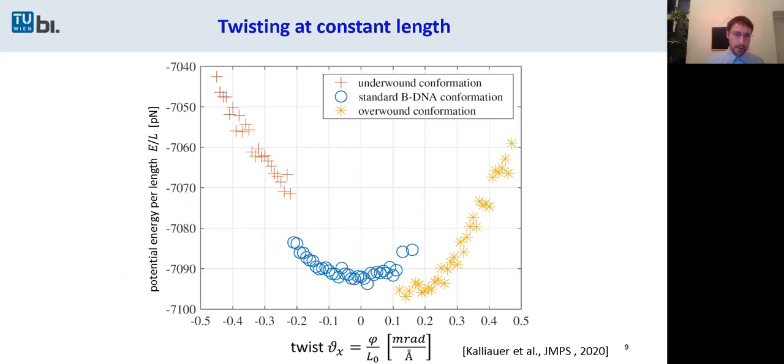Now we look at the other way around. We are twisting at a constant length. First of all, I want to show you the potential energy. Here you can see three different regions. For those three conformations marked in red, blue and yellow, I show you the normal force and the torsional moment.